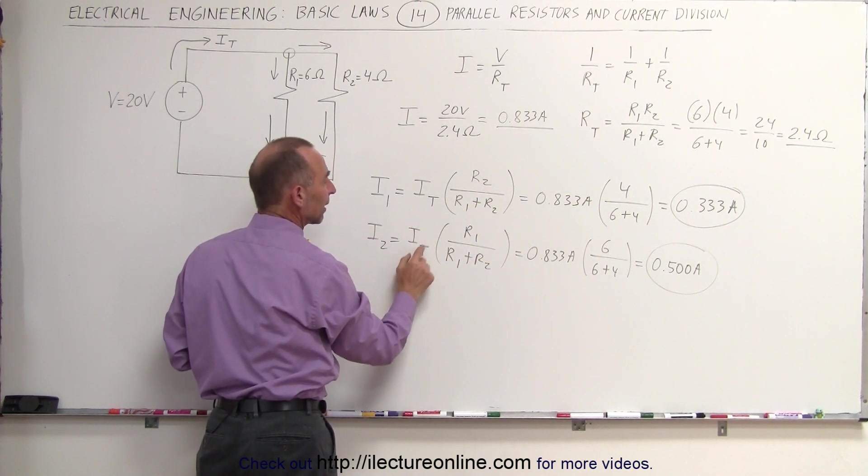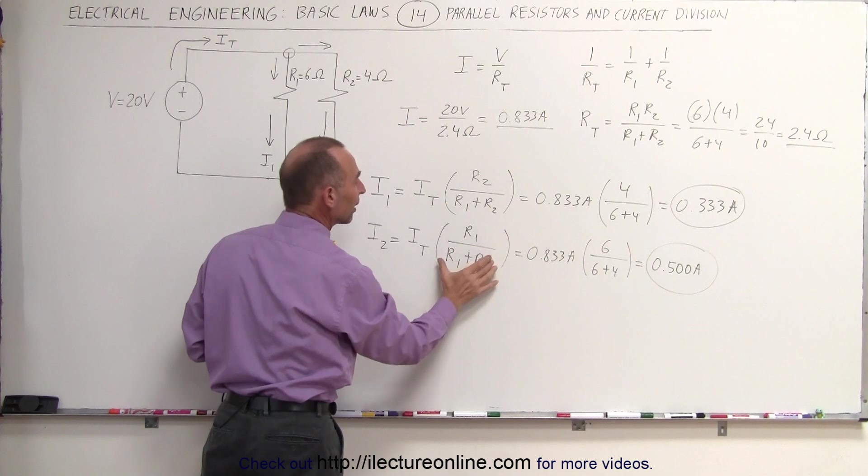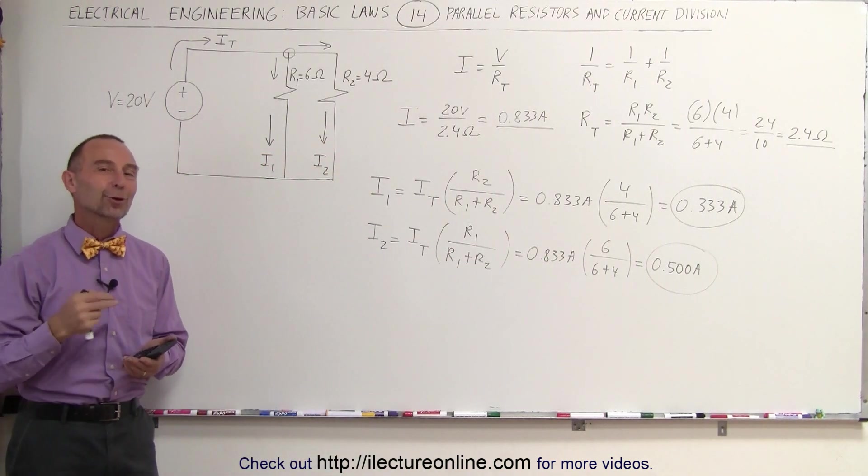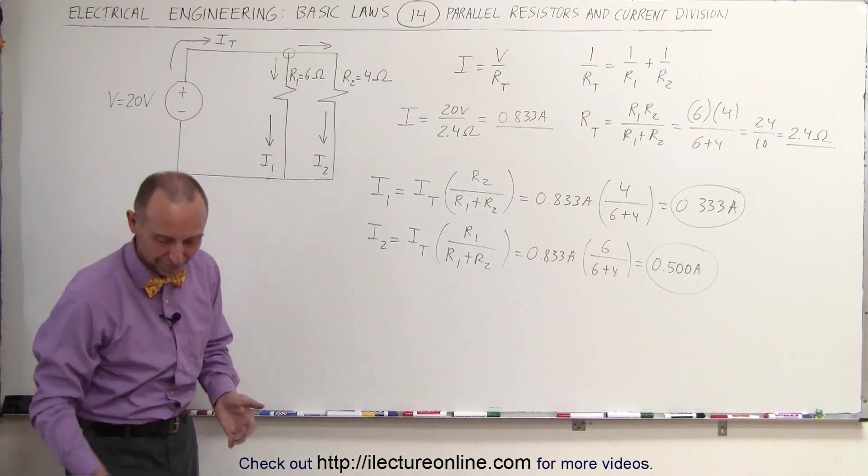Here again, you multiply times the resistance in the other branch divided by the sum of the two resistors. That's what we call a current divider. Thank you.